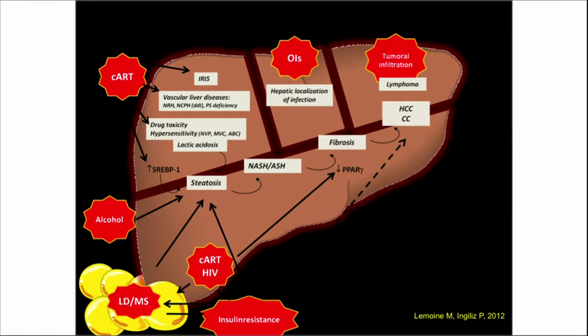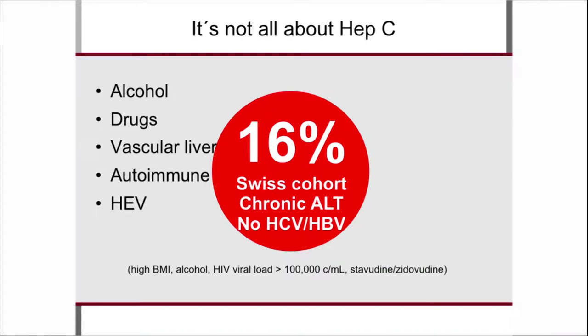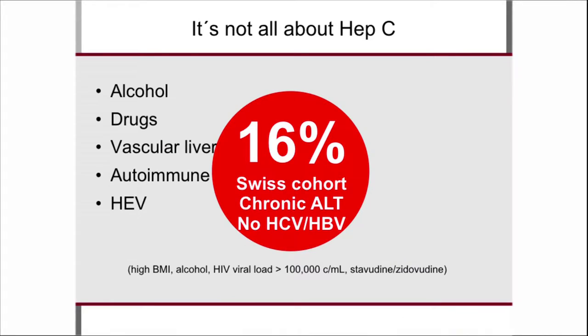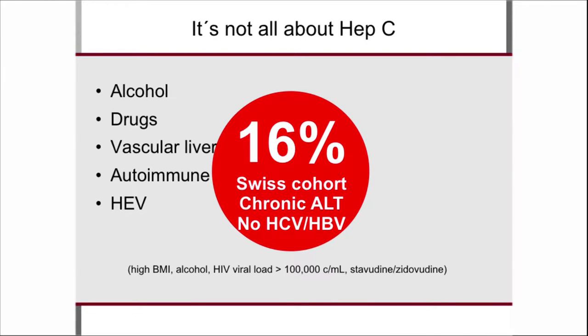I'm going to talk about some other things that can cause liver disease in HIV: it's related to alcohol, drugs, other drugs, and maybe infections. It's not all about hepatitis C; we have other problems and I'm going to talk about these five issues. We'll have a short look at hepatitis E, although my talk is called non-viral hepatitis. The Swiss cohort says 16% of non-HCV, non-HBV patients have elevated ALT levels, which may be related to high BMI, alcohol intake, HIV viral load, and stavudine or zidovudine intake.